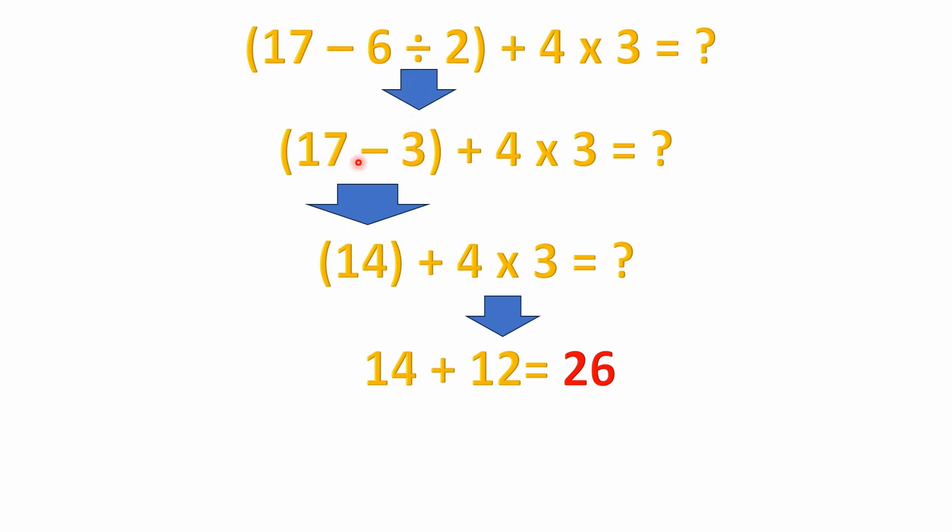So in parentheses, you're going to have 17 minus 3. So we're going to continue with the parentheses and solve what's inside. 17 minus 3 is now 14. So we're left with 14 plus 4 times 3.